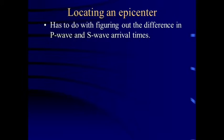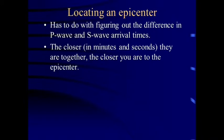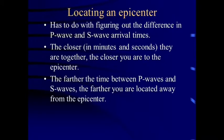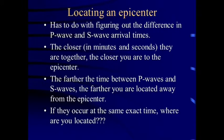Now, locating epicenters has to do with figuring out the difference between P and S-wave arrival times — very similar to figuring out how close you are to a thunderstorm, like the difference between lightning and thunder. The closer in time the P and S-waves are, the closer you are to the epicenter. Conversely, the bigger the time between them, the farther you are. So if P and S-waves occur at exactly the same time, where are you located? Consider that question.